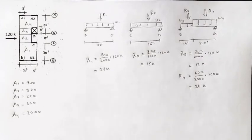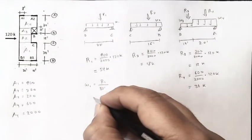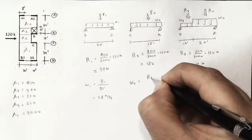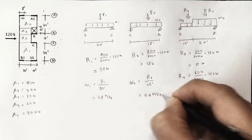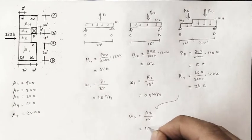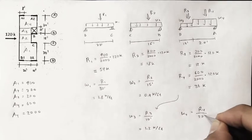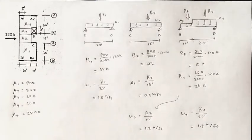We can also calculate the value of the distributed loads. W1 is going to be the value of R1, the total force, divided by this length of the beam, or 30 feet. We can calculate this to be 1.8 kips per foot. W2 is the value of the resultant, divided by the length of the beam, and we would calculate this to be 0.9 kips per foot. I'll come over here and calculate W3, the value of the resultant, divided by the length, and we would get 1.2 kips per foot. And lastly, W4 is going to be the value of the resultant, divided by the length, and this will be 1.8 kips per foot. So, let's make a mental note of these results, the values for the resultants, the values for the distributed loads.